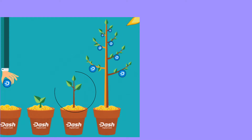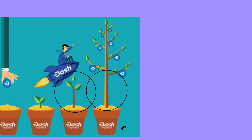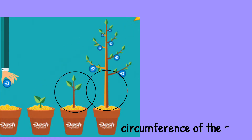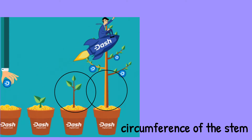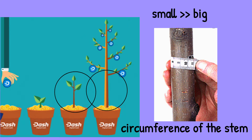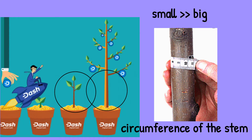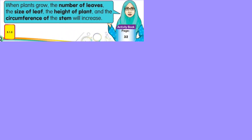Next, let's look at the stem. The stem also will change. We call this the circumference of the stem. The circumference will change from small to big — it will increase as the plant grows.